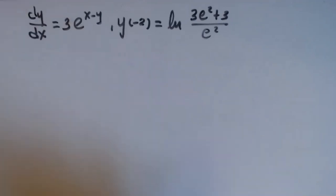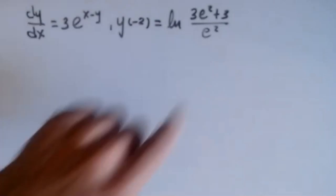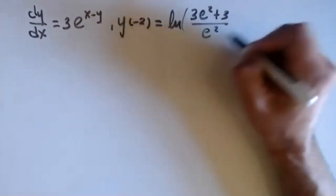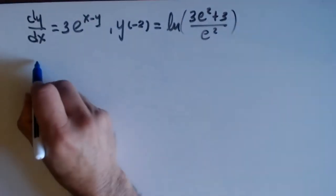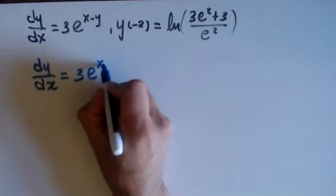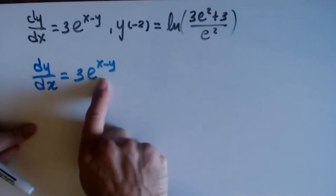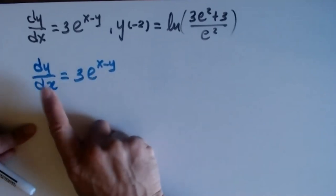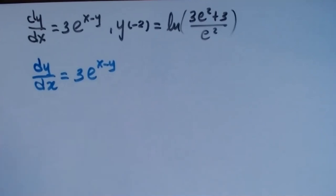Once you solve for y — if possible — you leave the constant. If you have a value like this initial condition, then you can find the value of the constant. Let's begin the algebra. We have dy/dx equals 3e^(x minus y). That's my equation. I have x's and y's mixed, so I need to collect all the y's on one side and all the x's on the other side.